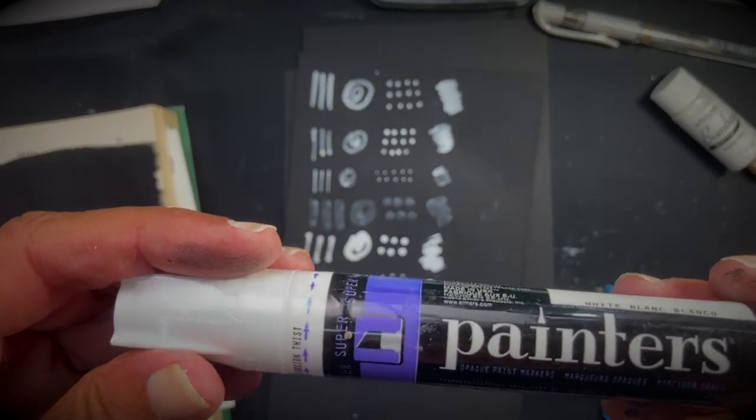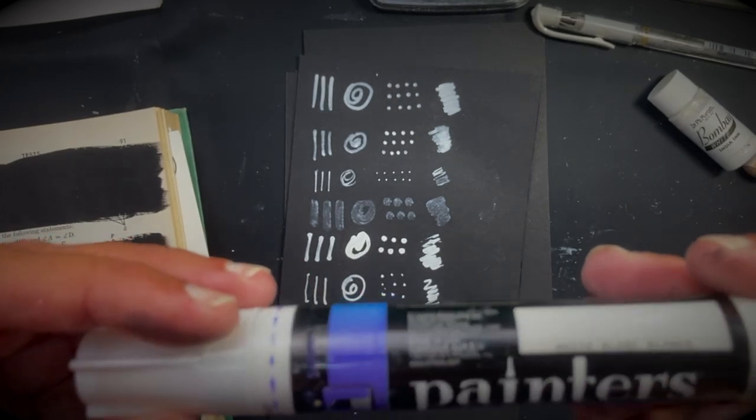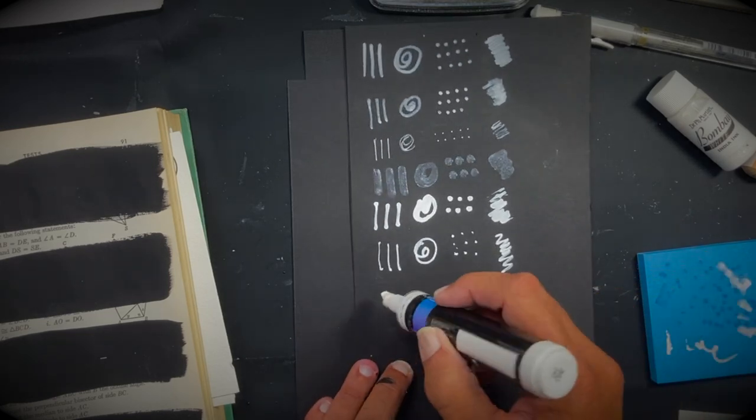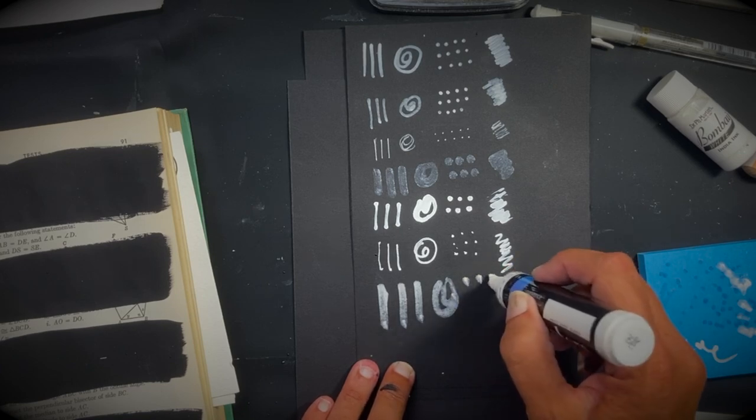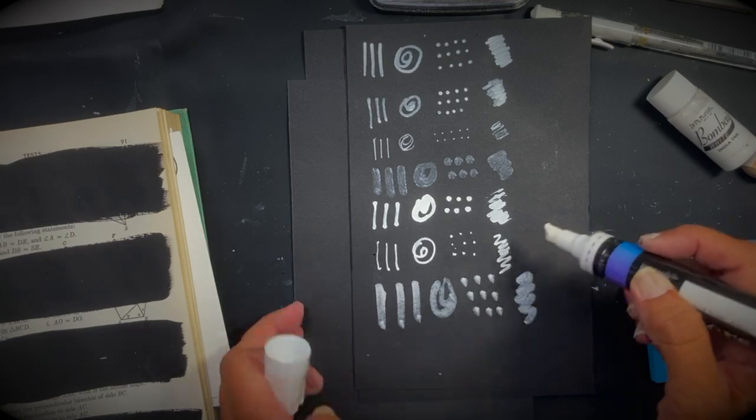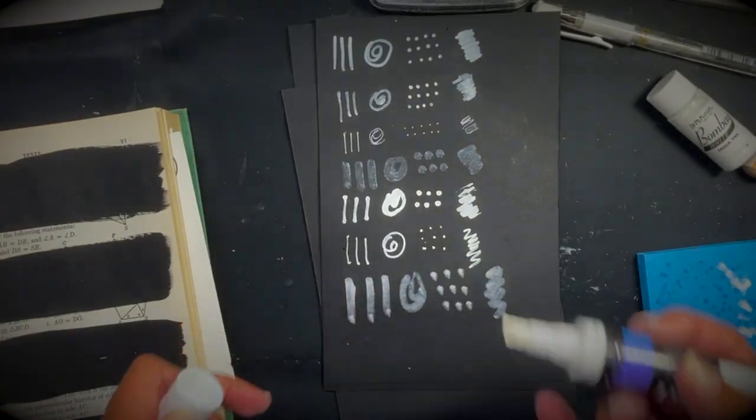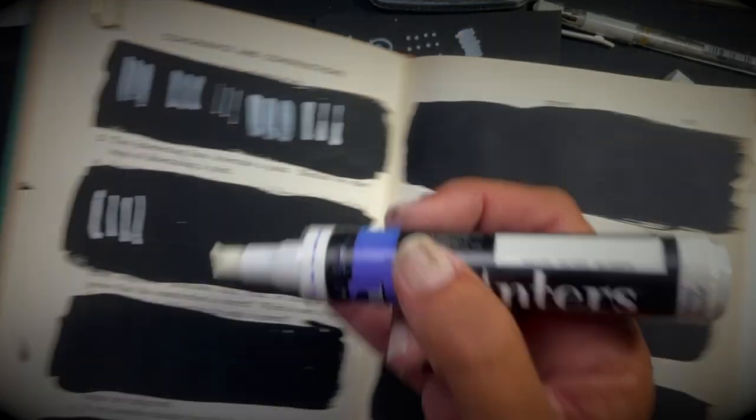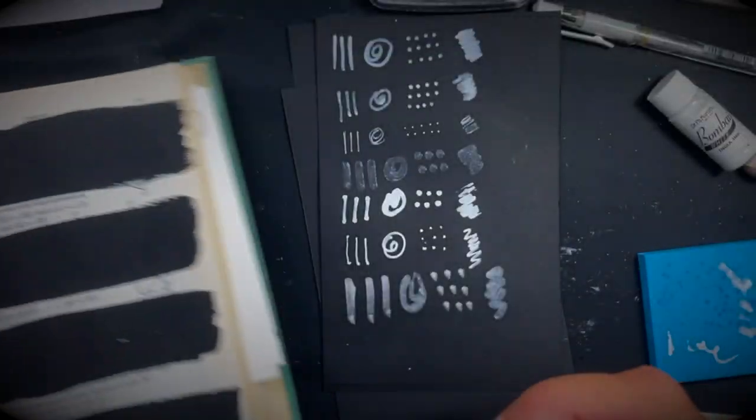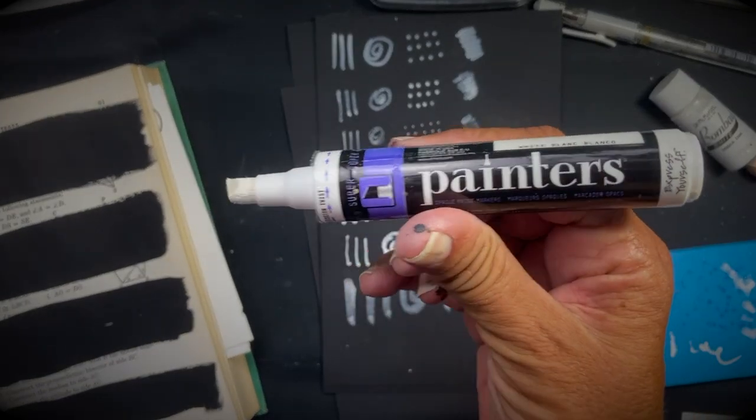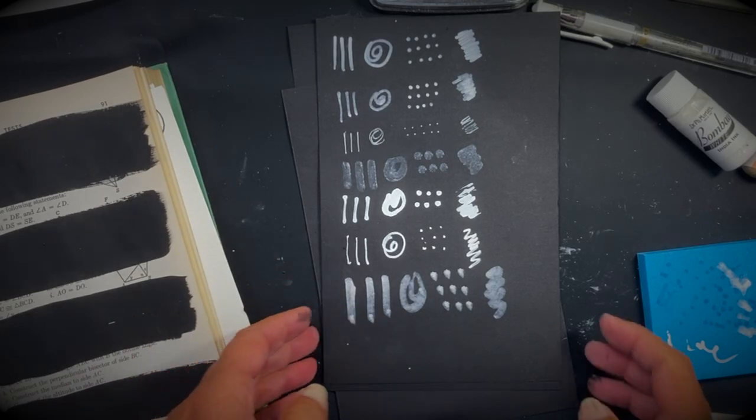This is opaque paint marker, painter's brand, made by Elmer's. I haven't used this one in a while, so I'm shaking it up. It's got a very large nib. And you'll notice some of these are very kind of wet looking when they go down. And you can look back at some of these and see that the moisture is kind of soaked into that card stock. So we'll do lines here on the gesso. So that's painter's brand. I think I got that at Walmart. It's a thick paint marker.